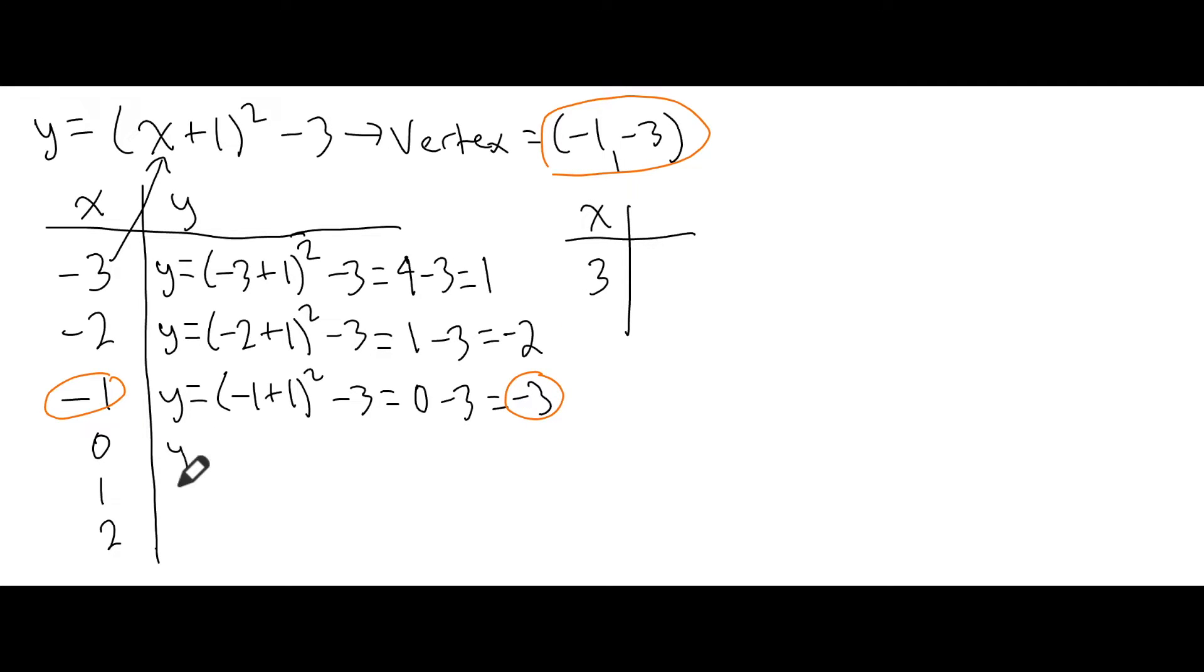For our next one, we take the 0 and sub in the 0 into x. I'll go a little faster with this. We have (0 + 1)² - 3. That's just going to give us 1. And then 1 - 3, we end up getting -2. I'm hoping some of you might notice that -2 comes up twice here. We're starting to see a little bit of symmetry, which is exactly what we want to see when we have parabolas because parabolas are symmetric.